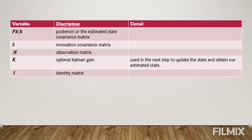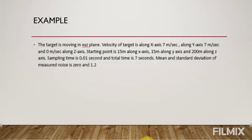Now we will see an example of the Kalman filter in MATLAB. The target is moving in the XYZ plane with a velocity of 7 m/s along the X axis, 7 m/s along the Y axis, and 0 m/s along the Z axis. The starting point is 15 m along the X axis, 15 m along the Y axis, and 200 m along the Z axis. The sampling time is 0.01 seconds and total time is 7 seconds. The mean and standard deviation of measurement noise are 0 and 1.2, respectively.